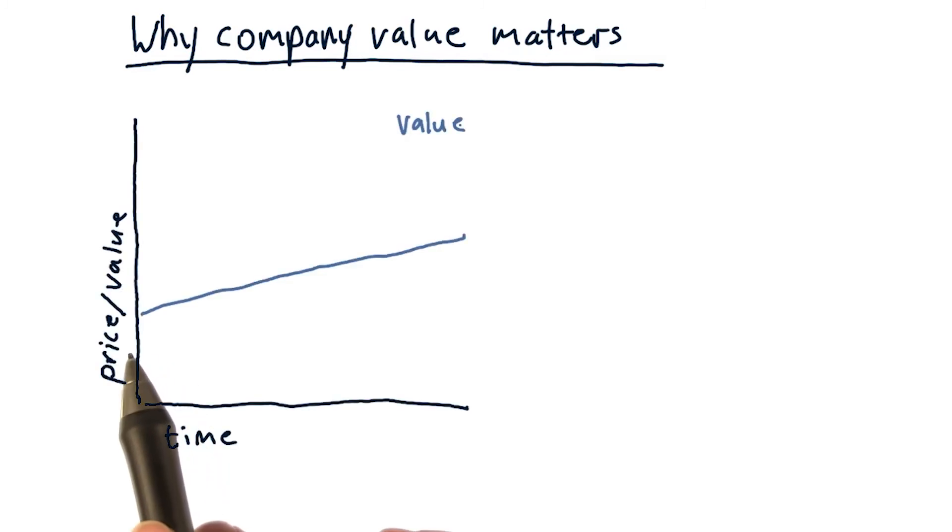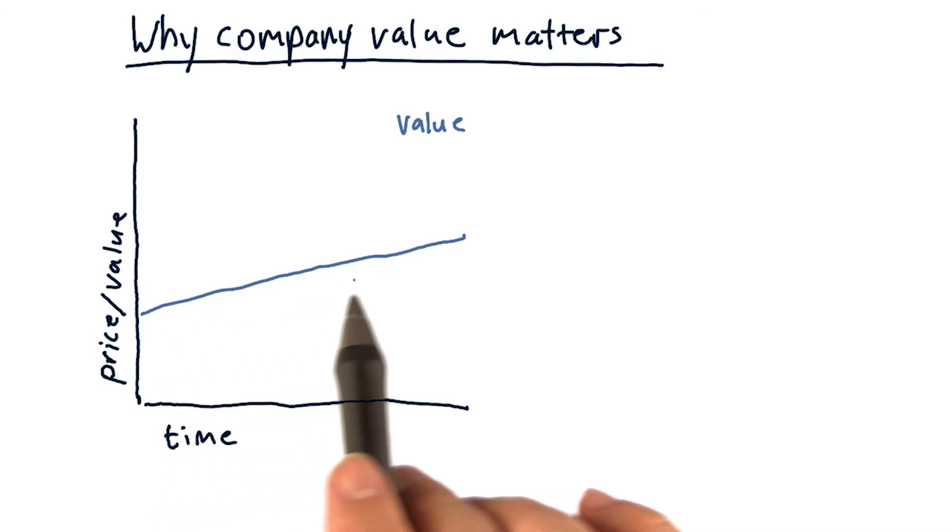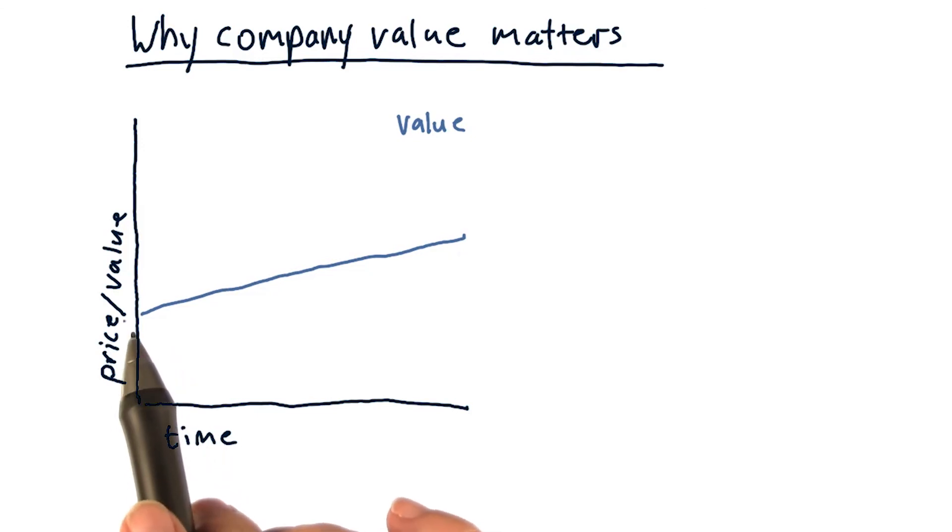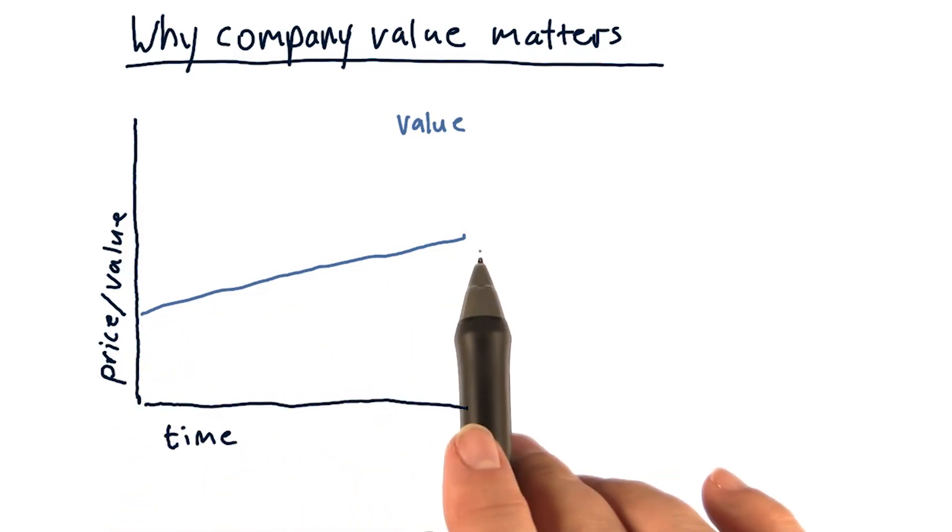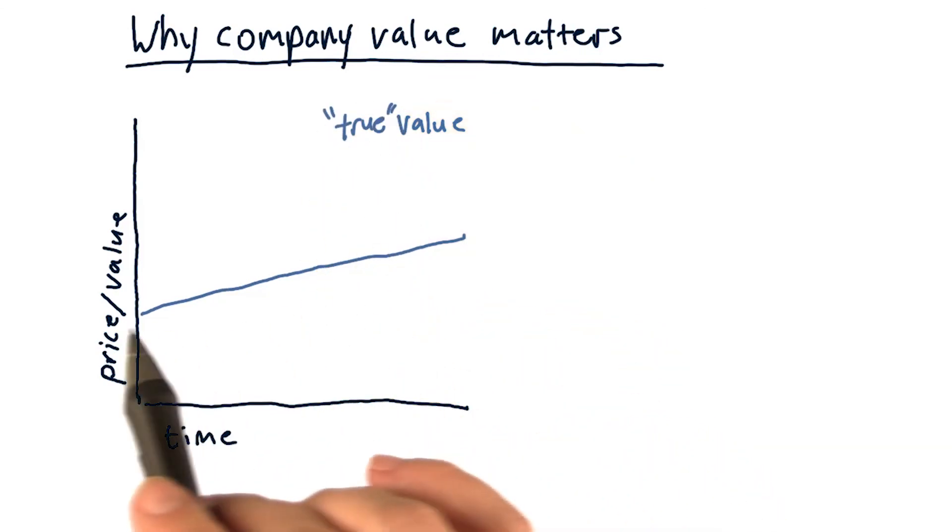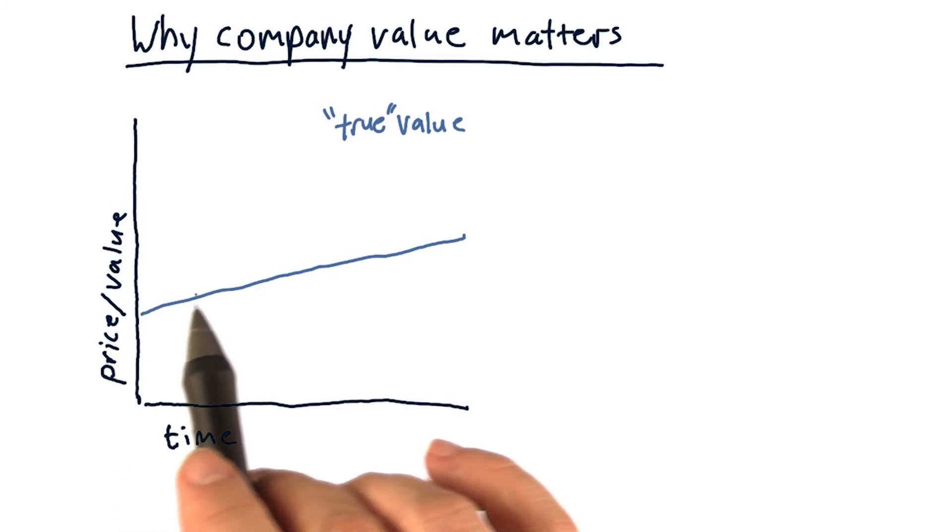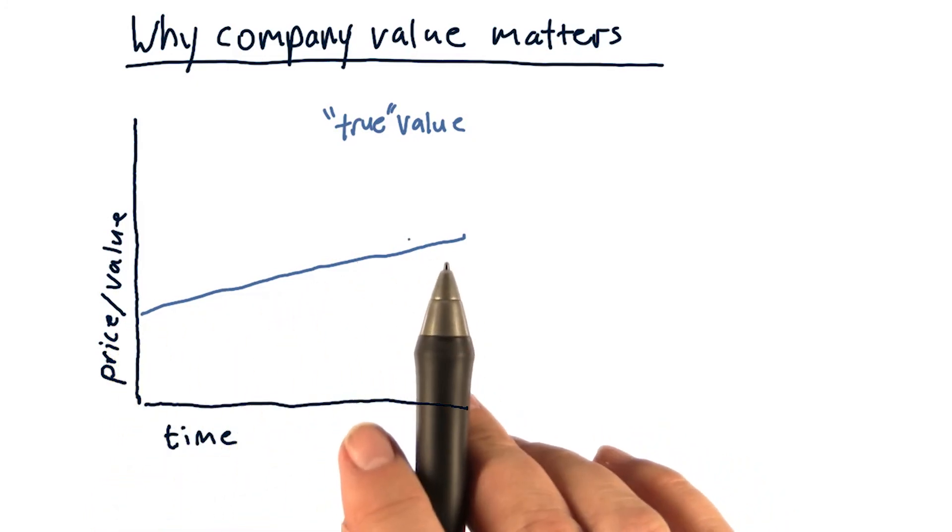In general, the value of a company goes up monotonically—in other words, it's always increasing over time. Let's assume for a moment this is the true value of that company. We'll address what 'true' means in a bit, but let's assume we have some understanding of the underlying real value of that company.